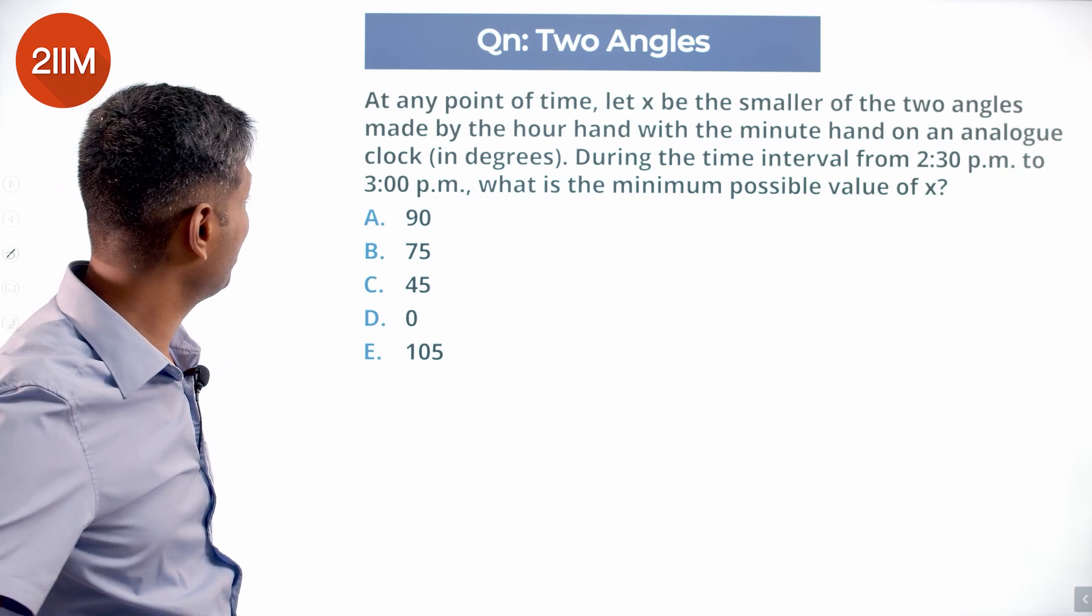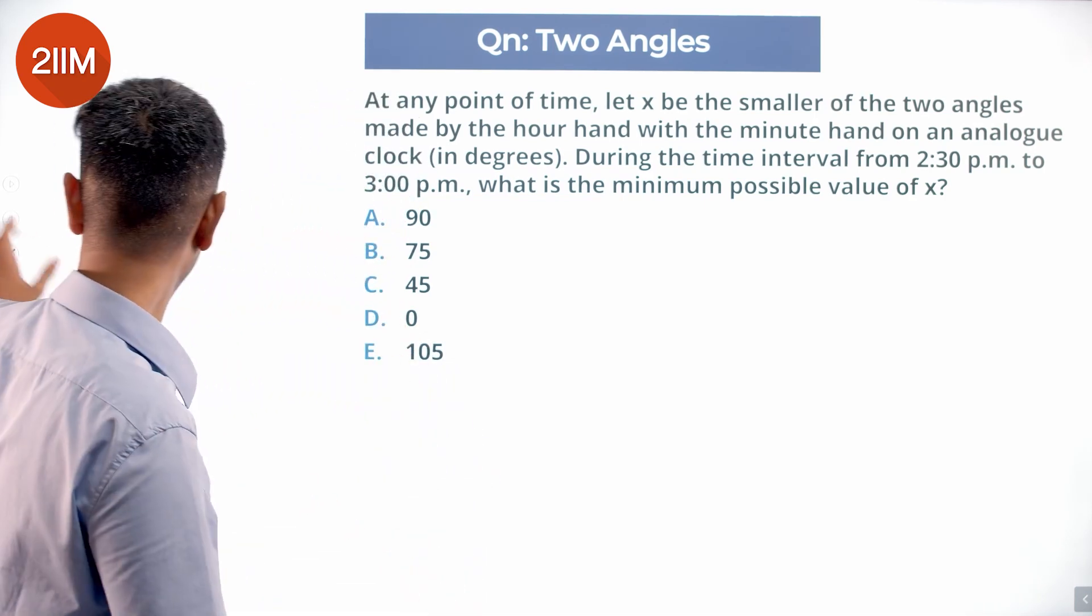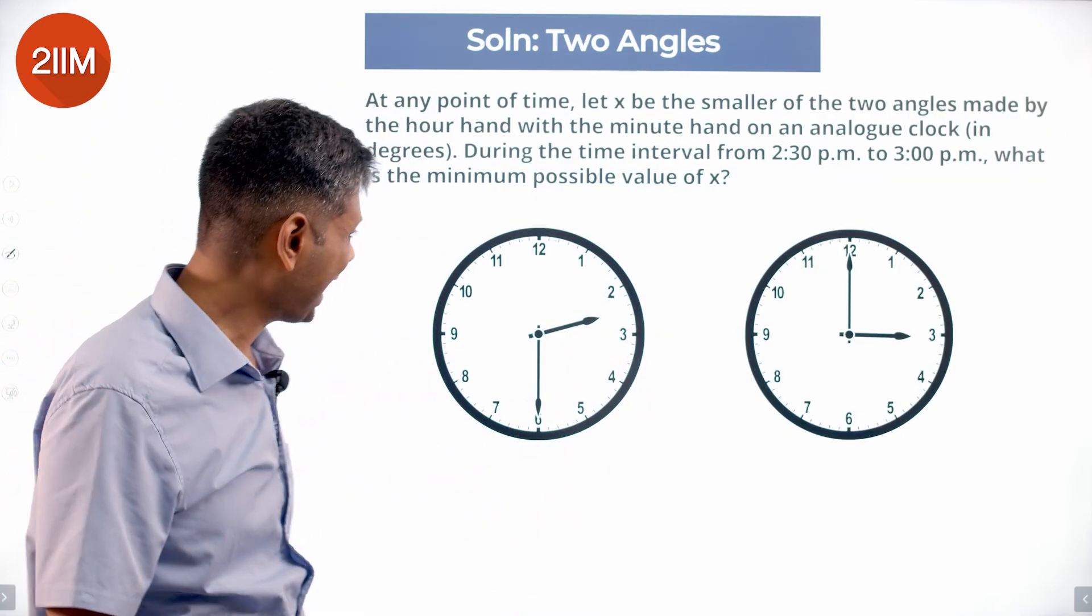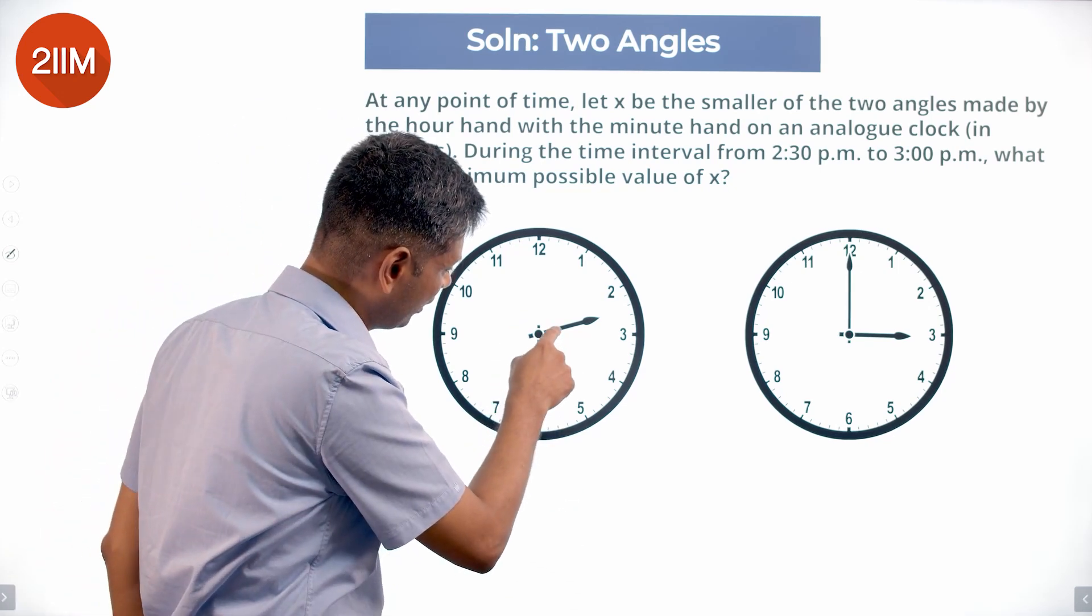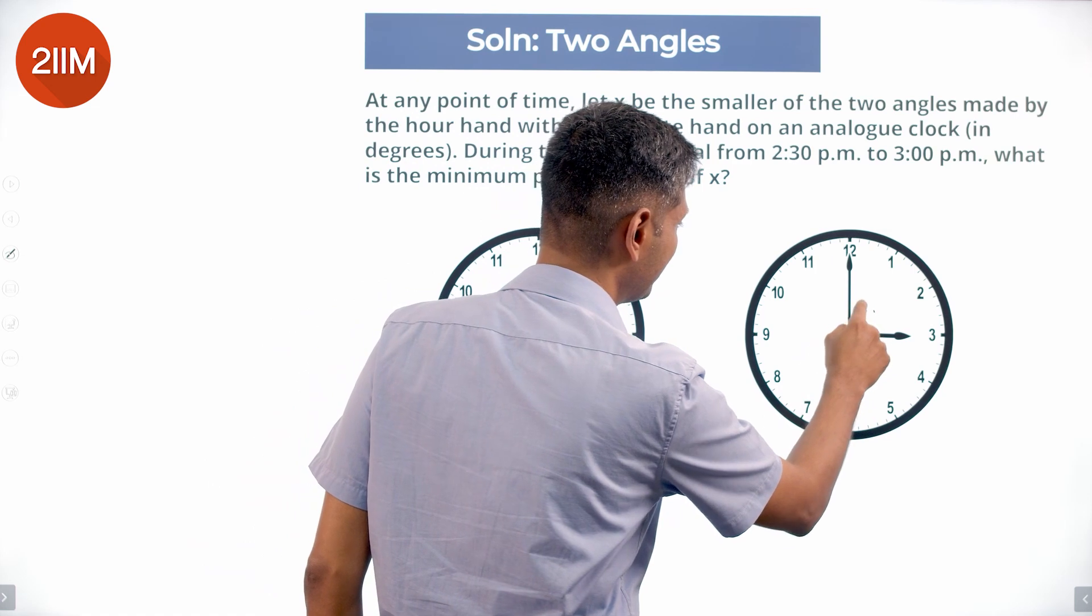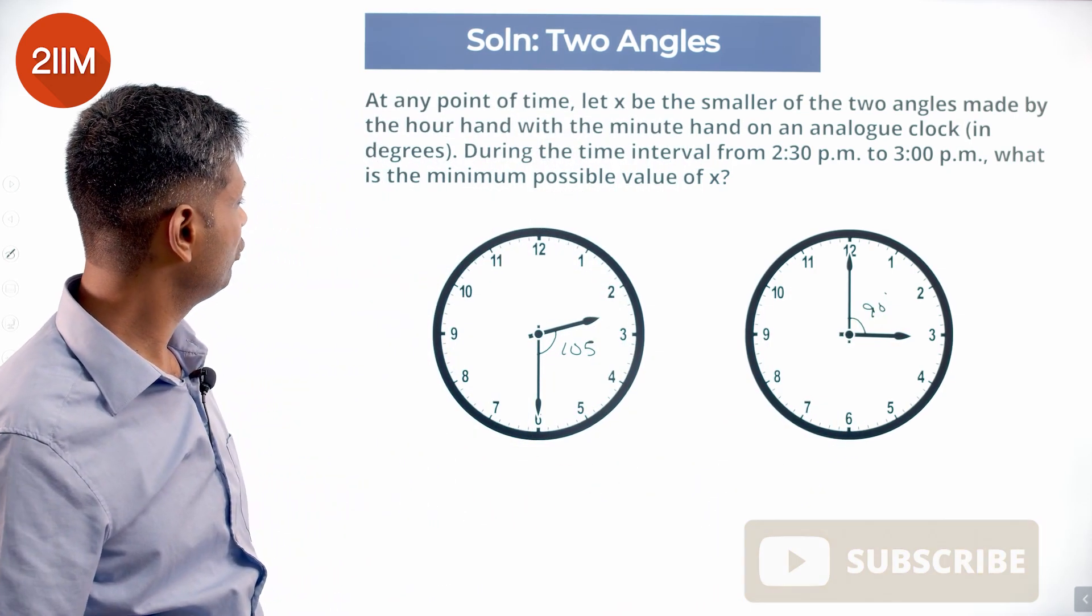During the time interval from 2:30 PM to 3:00 PM, what is the minimum possible value? Excellent question. I had a tough time winding my head around this. This is 2:30, this is 3:00. The angle here is 105 degrees, angle here is 90 degrees. The question makes it very clear that the angle we are thinking of is the lesser of the two angles.